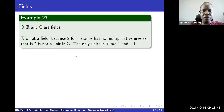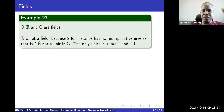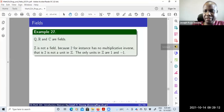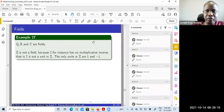Typical examples of a field are Q, R, and C — the set of rational numbers, real numbers, and complex numbers — they all form a field. Of course, the set Z is not a field. In fact, it's not even a division ring, because if you take any non-zero element apart from negative one and one — for instance, two — the multiplicative inverse of two is one over two, but one over two is not an integer.